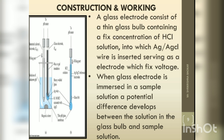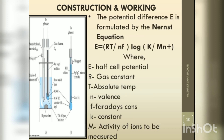When the glass electrode is immersed in the sample solution, a potential difference develops between the solution inside the glass bulb and the sample solution. The potential difference E is formulated by the Nernst equation: E = (RT/nF) × log(K / [M^n+]).